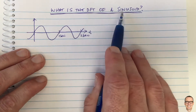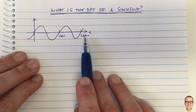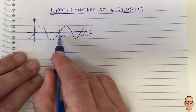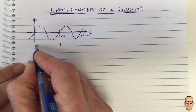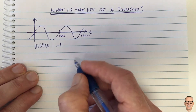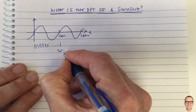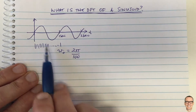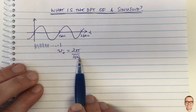Let's look at the discrete Fourier transform of a sinusoid. Consider a continuous time signal sampled at 100 samples per second for one second, giving us 100 samples total. This means the angular frequency is 2π divided by 100, because the sinusoid goes through one cycle in 100 samples.